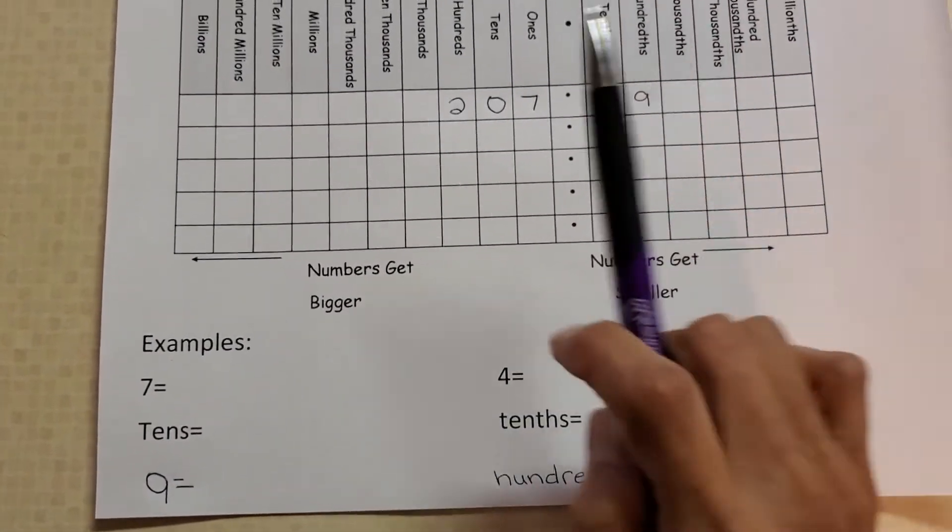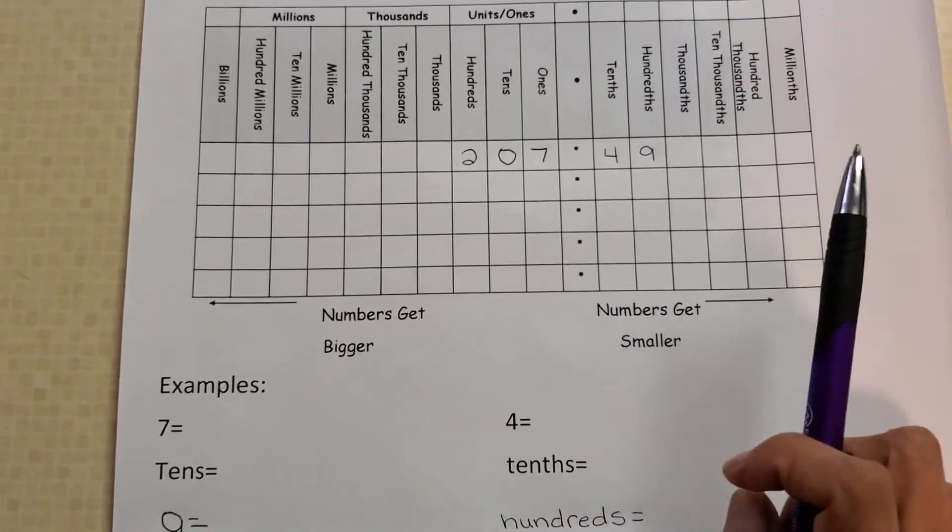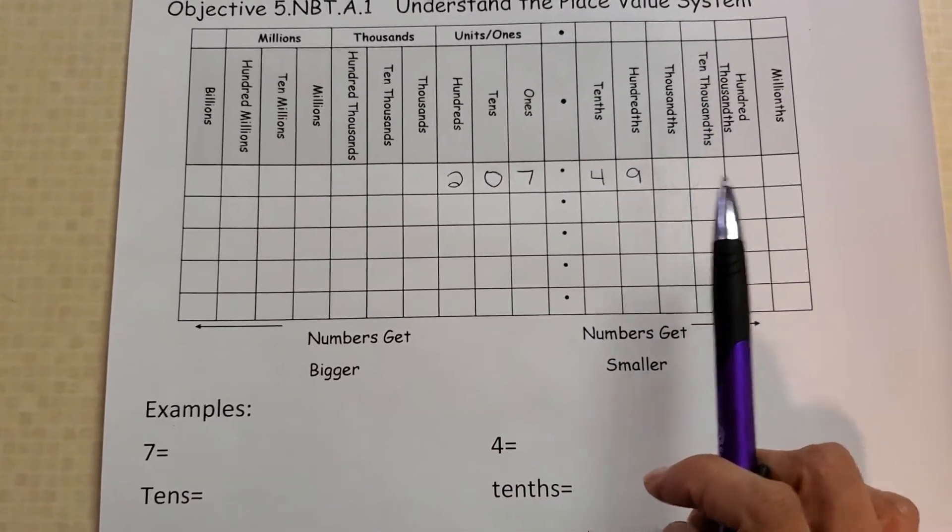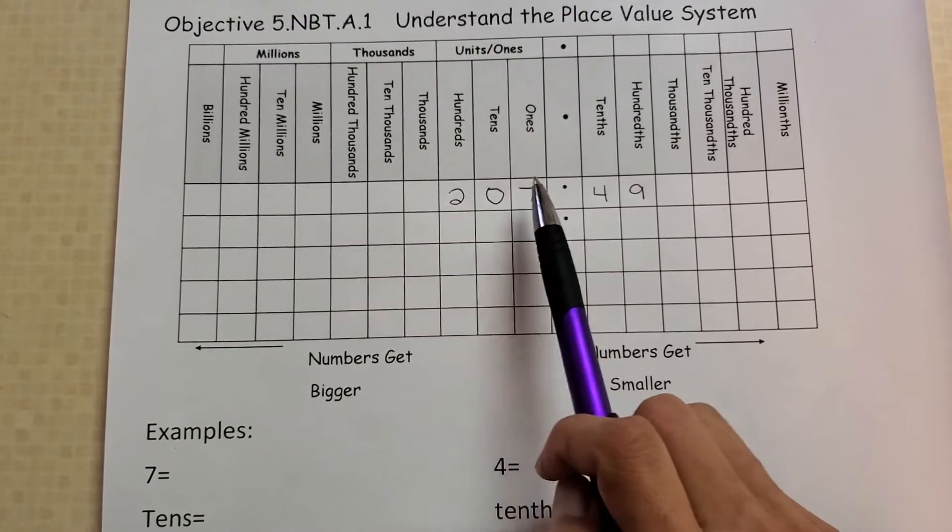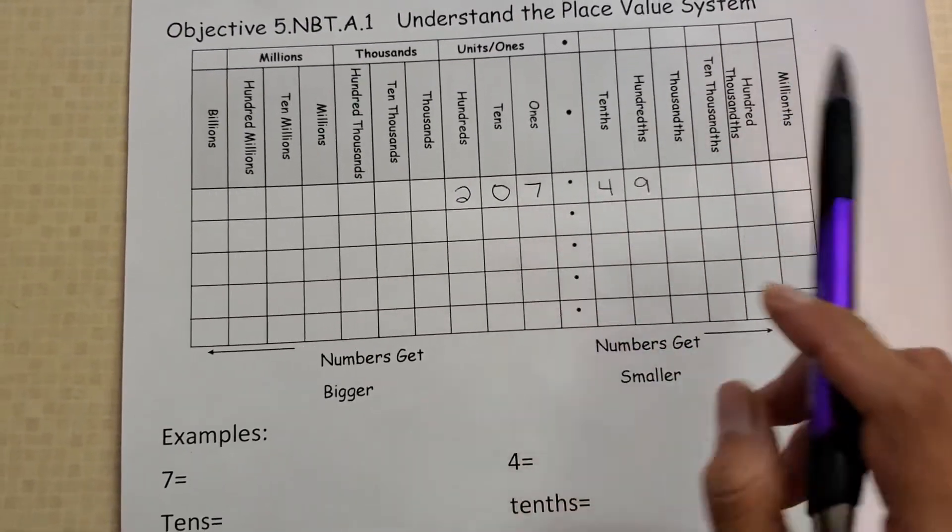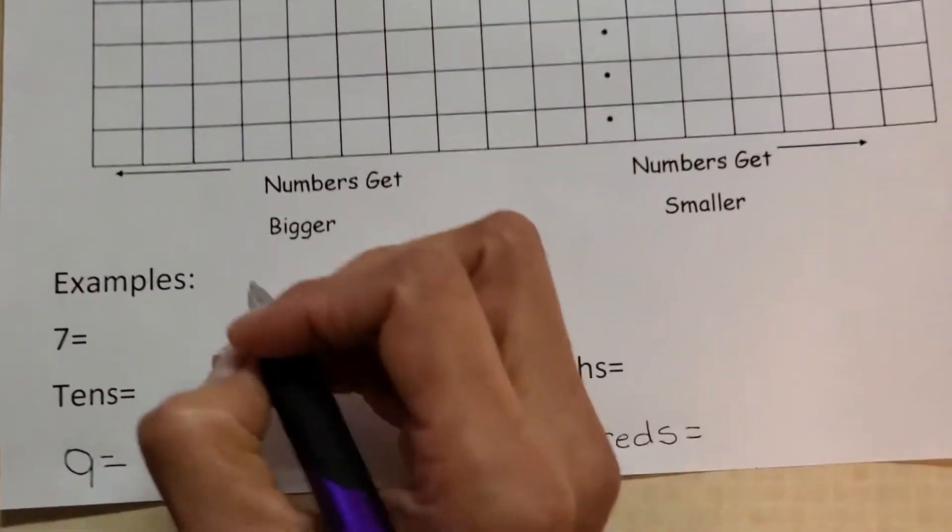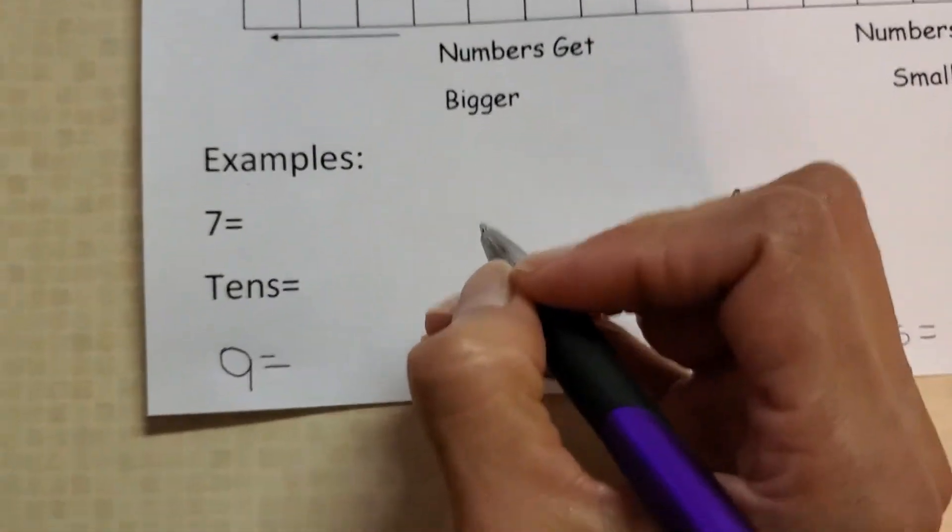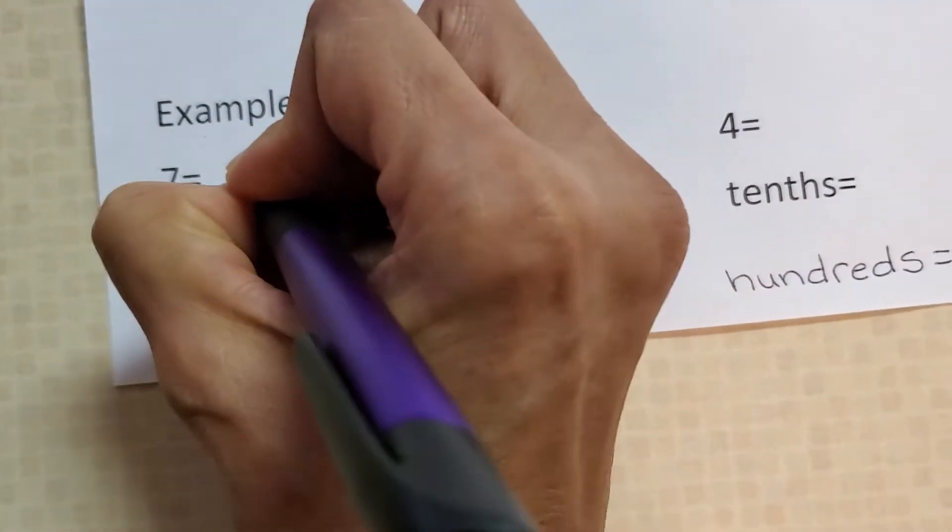It wants to know, or I want to know, what place seven is in. So take a look up here, seven, and you go up. It's in the ones position. So all you're going to do is put ones. It's in the ones position.